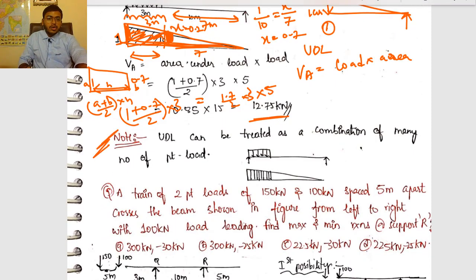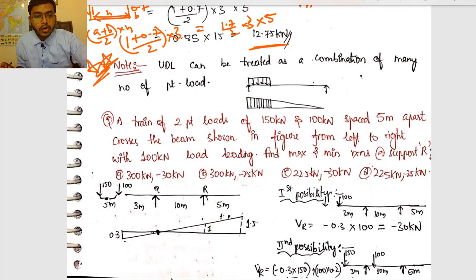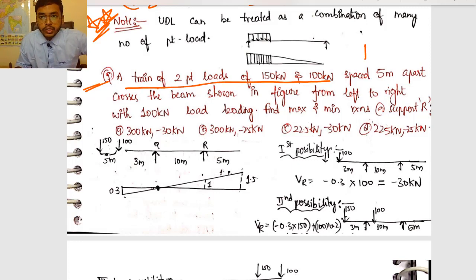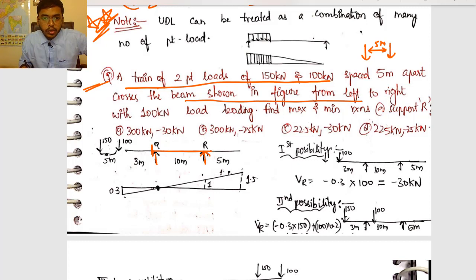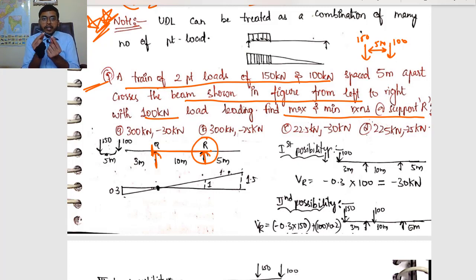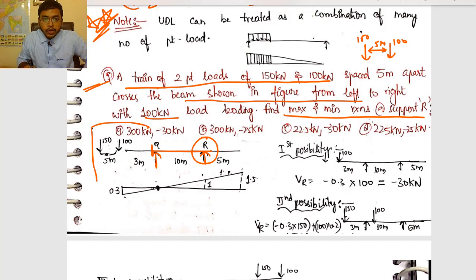Now let's solve one more question related to ILD of support reactions before moving to ILD of shear force. A train of two point loads — 150 kN and 100 kN spaced 5 meters apart — crosses the beam from left to right, with the 100 kN load leading. Find the maximum and minimum reaction at support R for the overhanging beam shown.